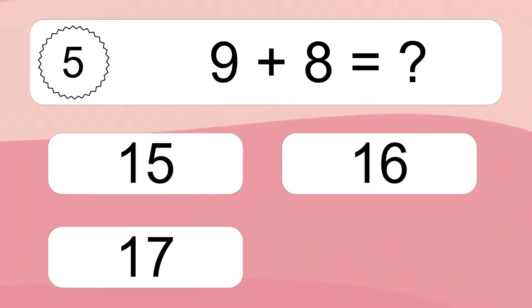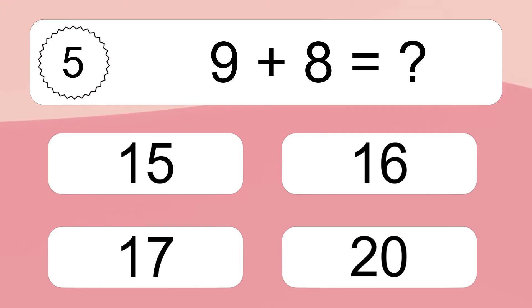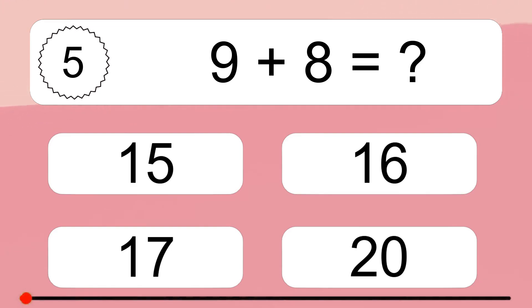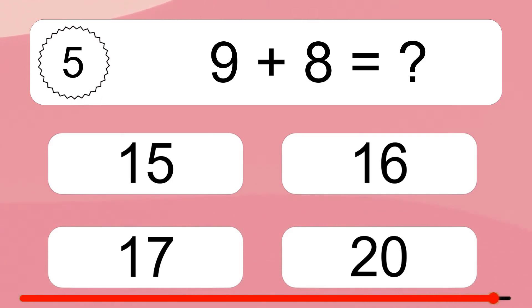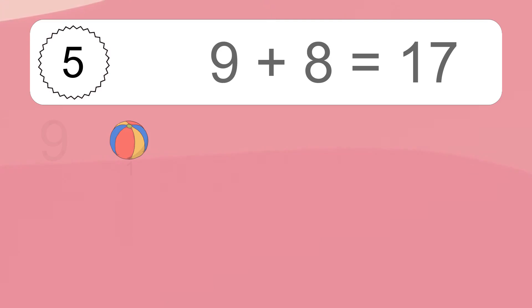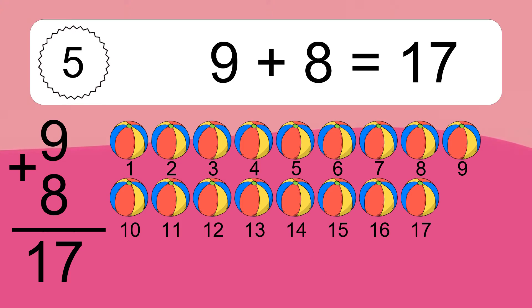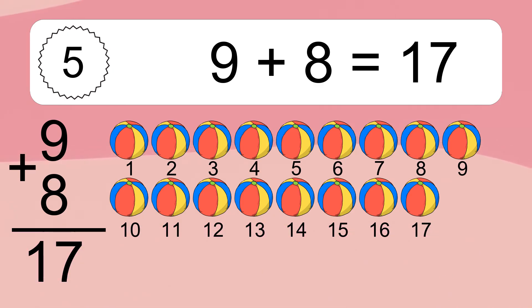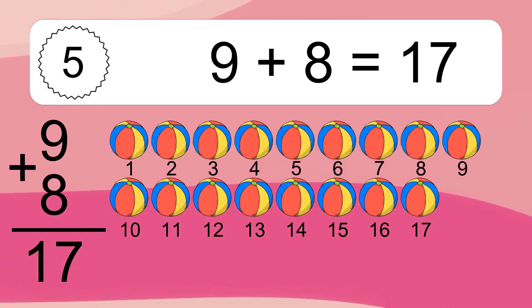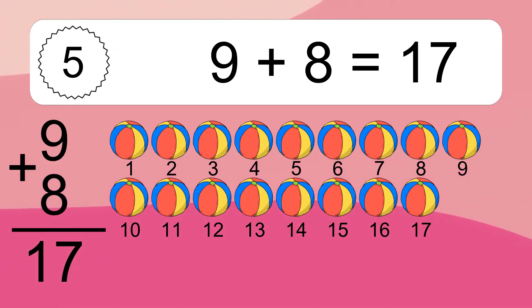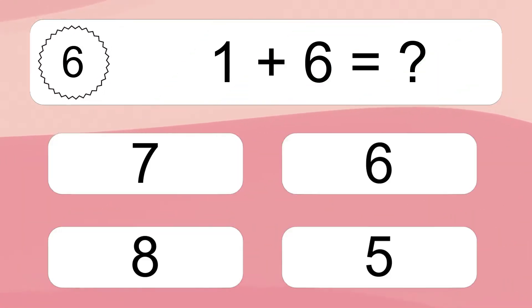9 plus 8 equals what? 9 plus 8 equals 17. Let's count it. 1, 2, 3, 4, 5, 6, 7, 8, 9, 10, 11, 12, 13, 14, 15, 16, 17.